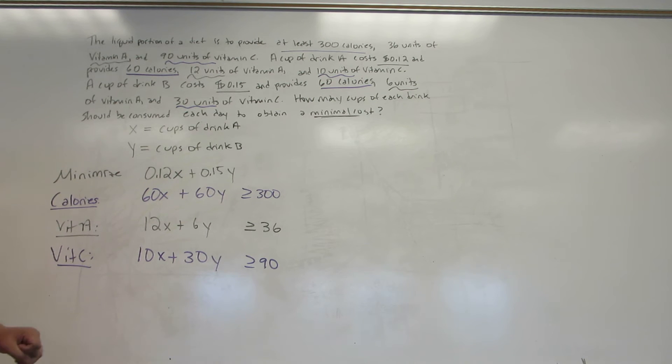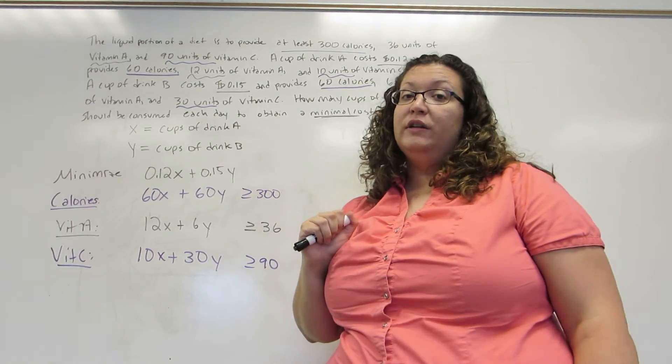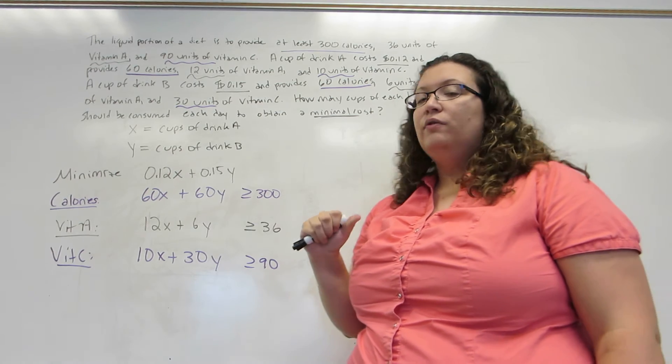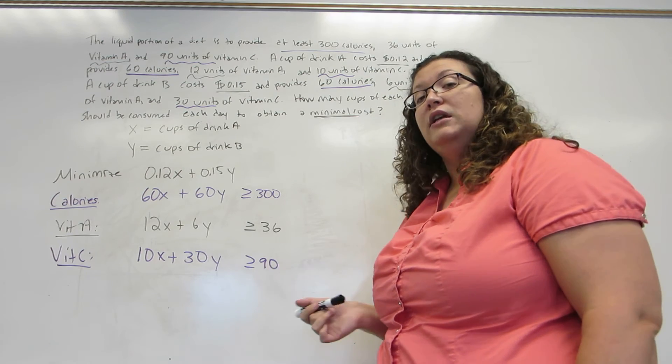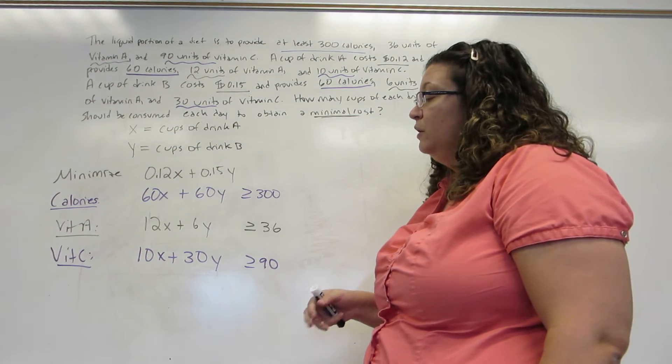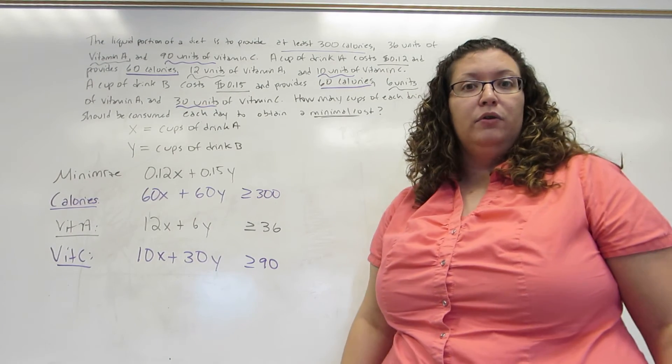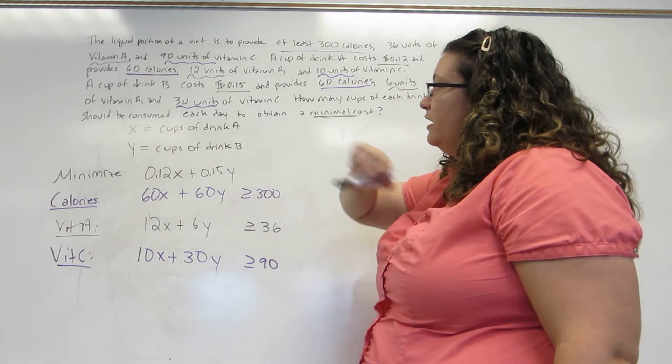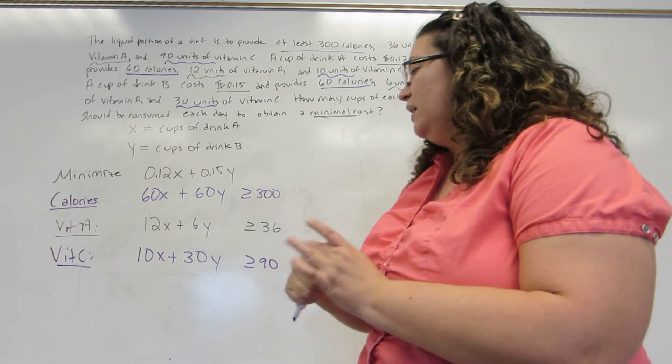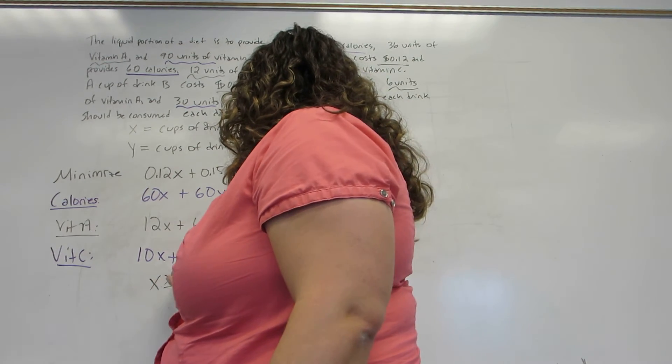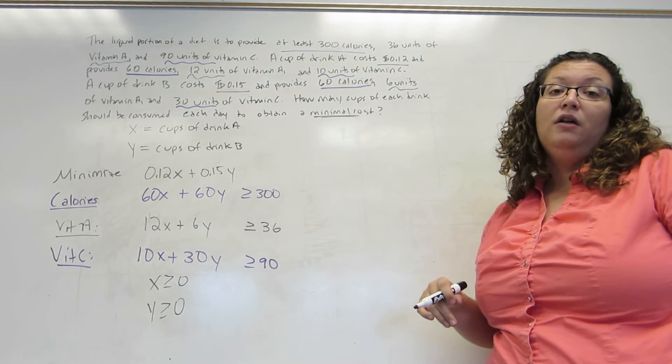Now there's one thing that the problem never actually explicitly states in its word portion, but you have to remember to always put, and that is the non-negativity conditions. These do not appear in every problem, but you should always check. Is it possible to have X or Y be negative numbers? In other words, is it possible to have negative cups of some kind of drink? That makes absolutely no sense. So we need to add two inequalities at the bottom that tell us that X and Y cannot be negative for the problem to make logical sense.